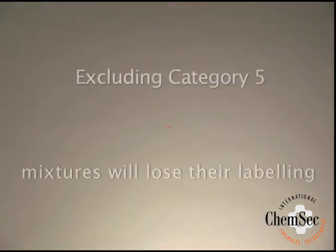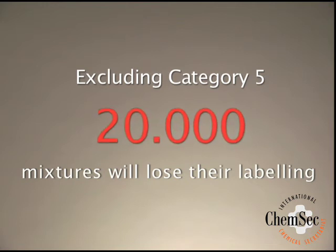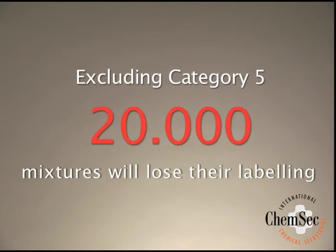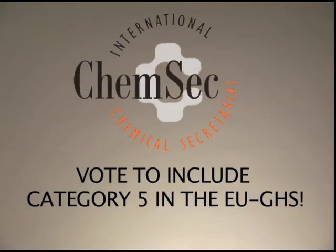Excluding the category, as currently proposed by the Commission, would directly result in the loss of labelling for toxicity of over 20,000 mixtures in the EU. Our recommendation is that the members of the European Parliament, as well as the representatives in the Council of Ministers, vote to include category 5 in the European Union GHS.